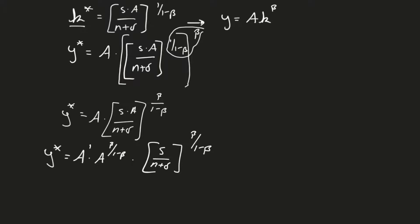Now, I know that this is a raised to the 1, and I know that then this is a beta over 1 minus beta. So I know if I have a multiplied exponent, I just add them up. So y star is going to equal a to the 1 plus beta over 1 minus beta, multiplied by s over n plus delta to the beta over 1 minus beta. We're just taking this step-by-step, this algebra is straightforward. I know every single person in here can do this algebra.